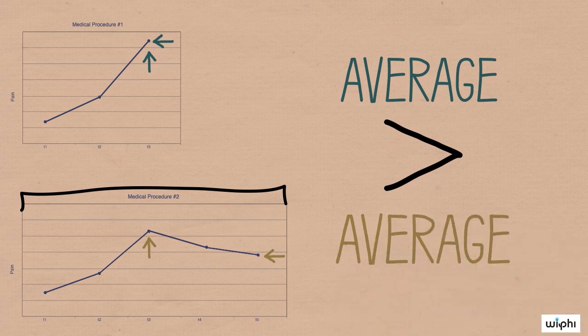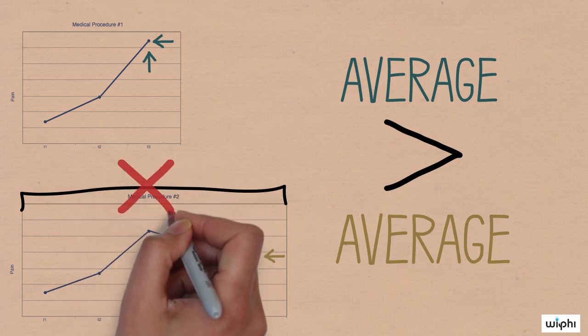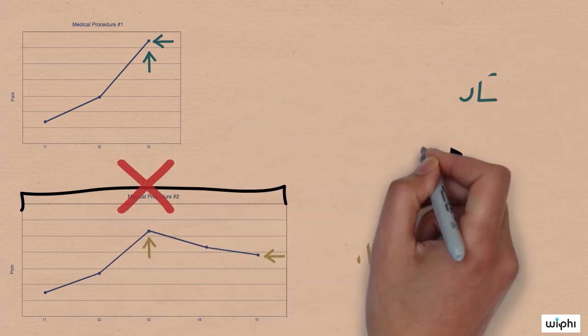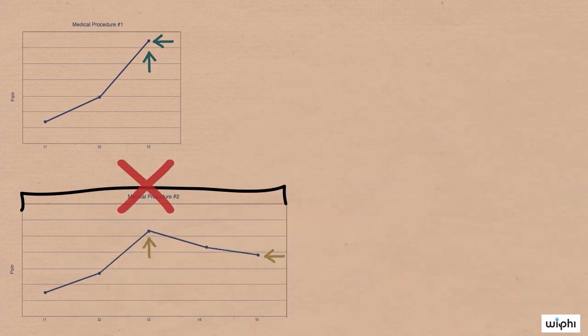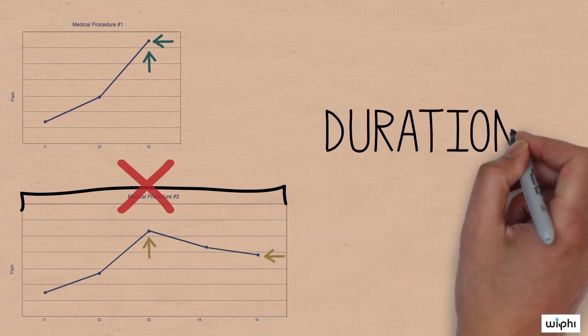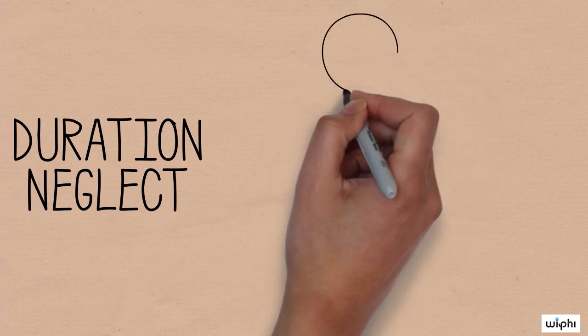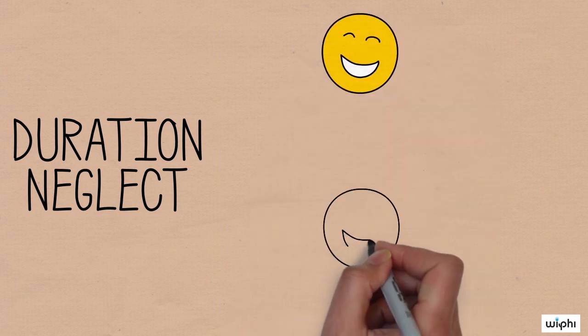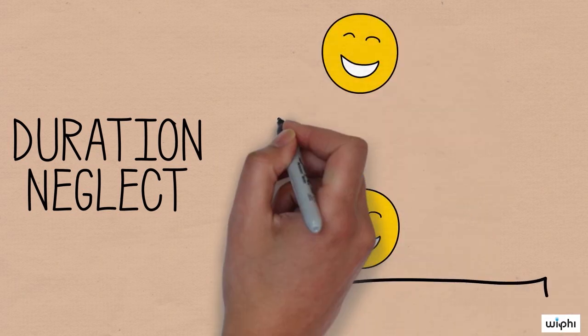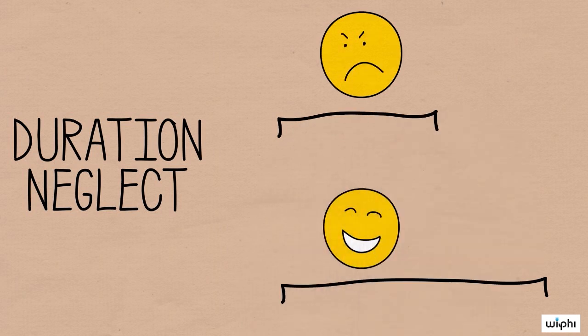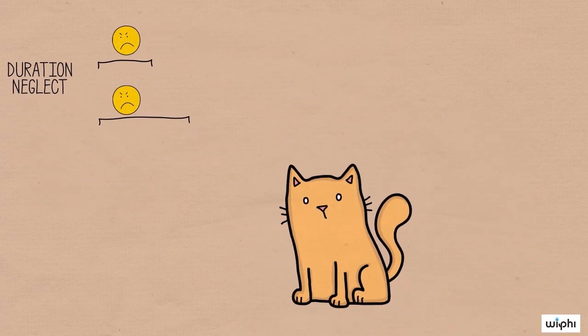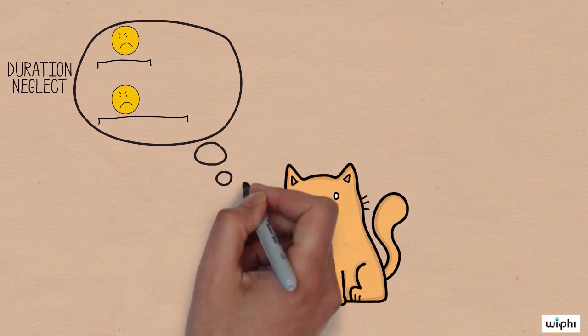Since our minds only take into account the peak and the end when remembering an event, there's no way to tell how long a particular event was. We just kind of ignore that part of the event in our evaluations. This phenomenon is known as duration neglect. Our duration neglect means that wonderful experiences can stay just as wonderful even when you keep them really short. It also means that you can make somewhat annoying experiences longer and you won't even remember them that way.